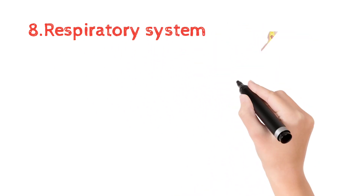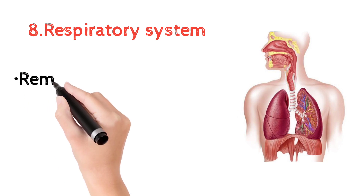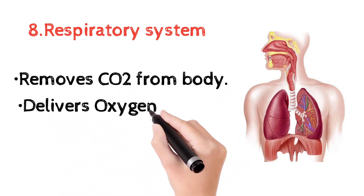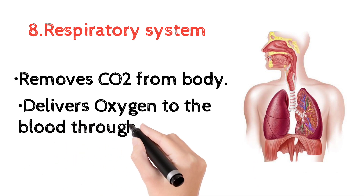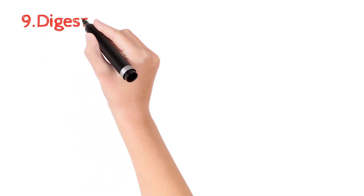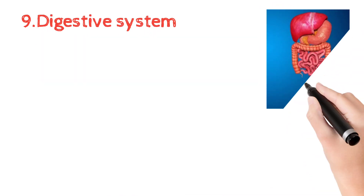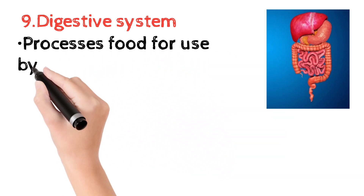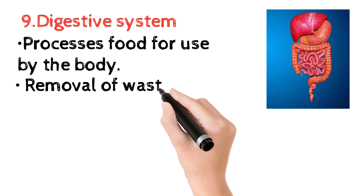The respiratory system works by removing carbon dioxide from the body and delivering oxygen to the blood through respiration. Next is the digestive system, which is responsible for the processing of food and the removal of wastes.